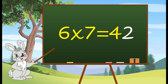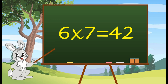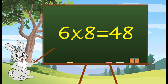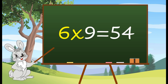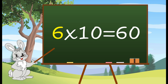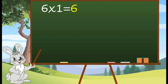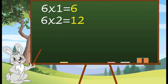Table of 6. 6 1's are 6. 6 2's are 12. 6 3's are 18. 6 4's are 24. 6 5's are 30. 6 6's are 36. 6 7's are 42. 6 8's are 48. 6 9's are 54. 6 10's are 60.